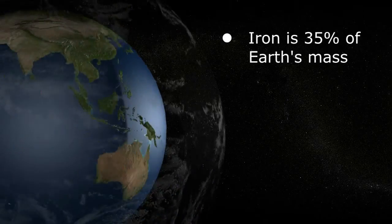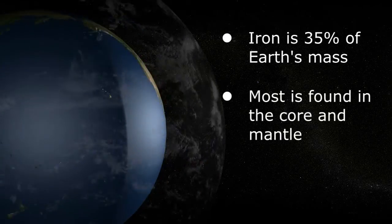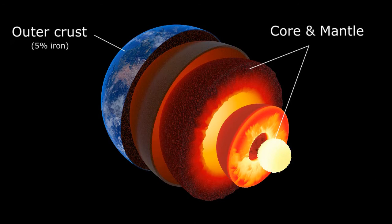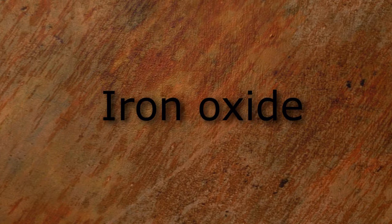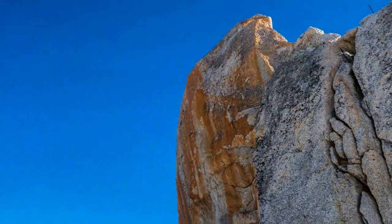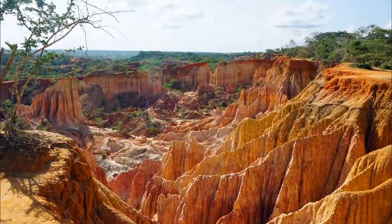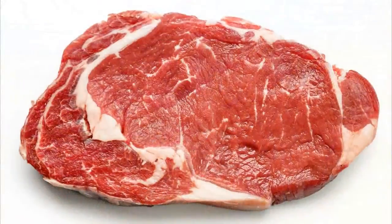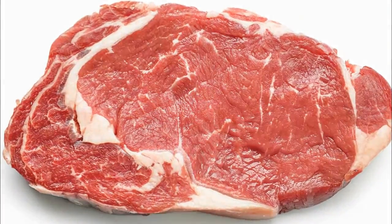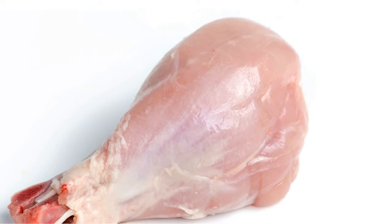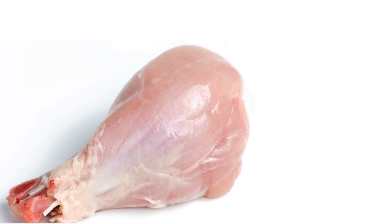Let's start with iron and meat. 35% of the Earth's entire mass is made up of iron, most of which is found in the core and mantle, with the outer crust about 5% iron. We're all familiar with the reddish and brown hues of rusty steel, representing various forms of iron oxide. Similarly, iron provides the brilliant reds and browns seen in stunning geologic formations. Iron is also responsible for the healthy red colors of a fresh steak or the darker meats of domesticated poultry like chicken drumsticks and thighs. These pigments are due to an oxygen-carrying molecule called myoglobin.